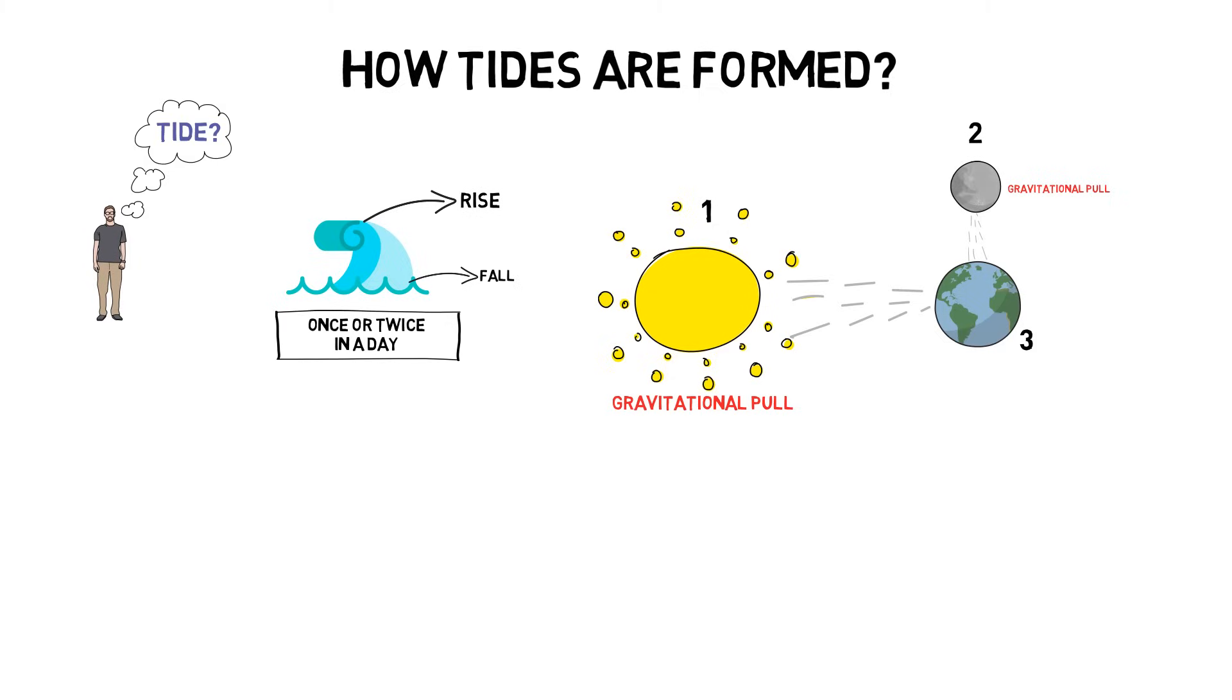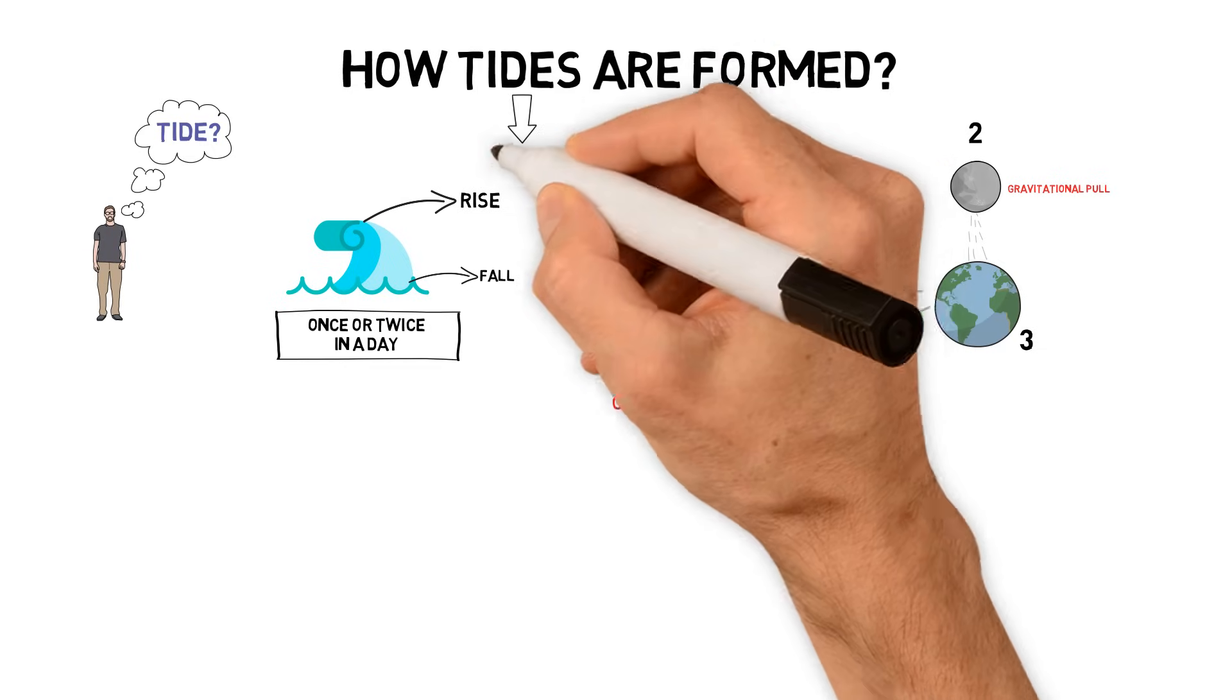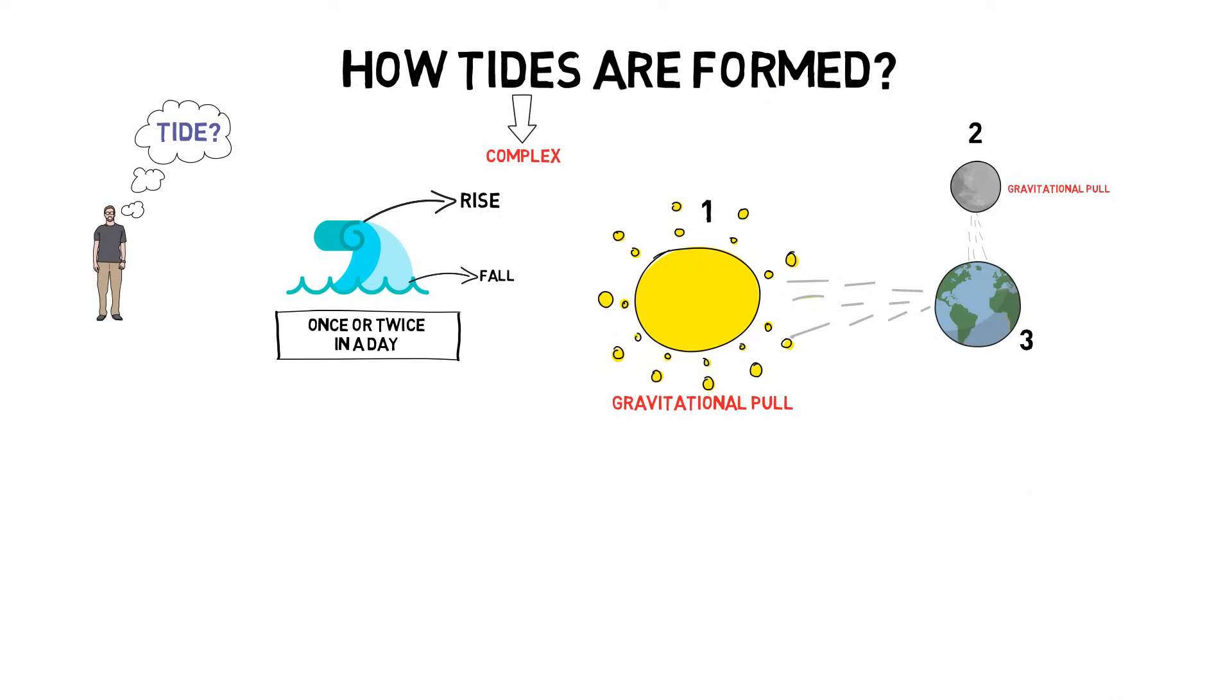All these three huge bodies have different gravitational pull, which creates a tide in the ocean. But in general, if you see, the study of tides is a very complex subject. It's very confusing.